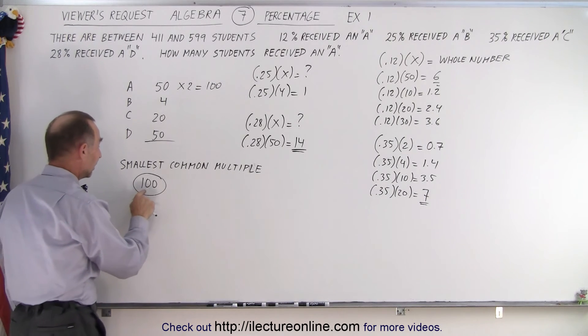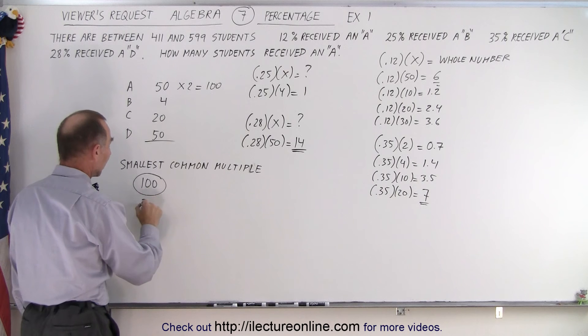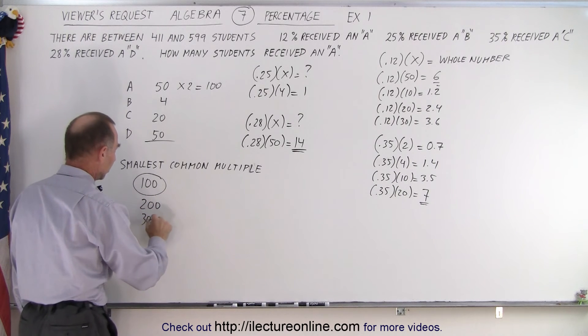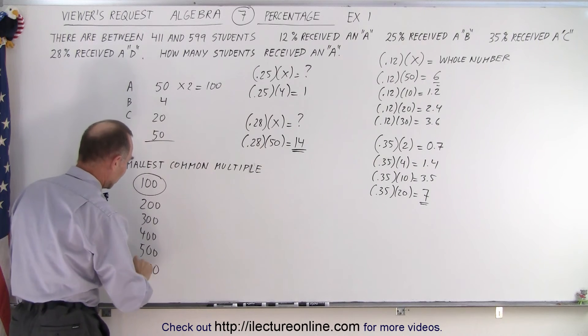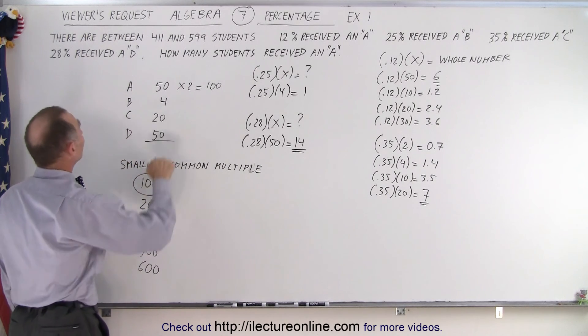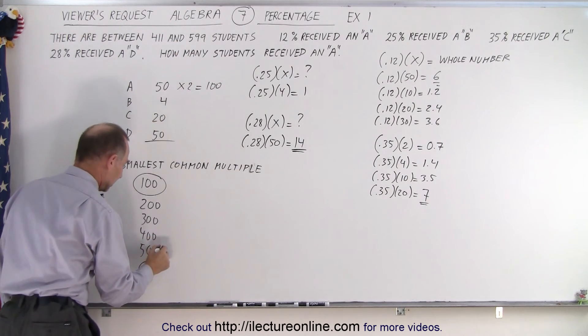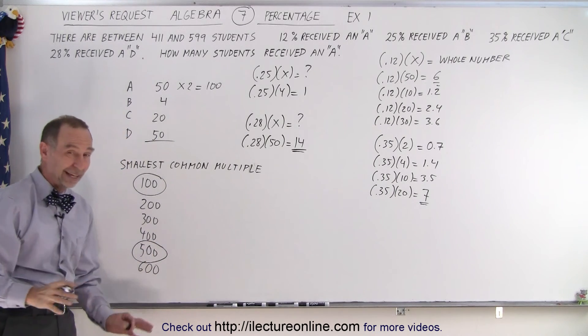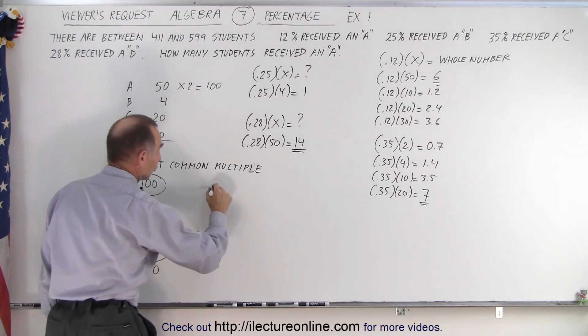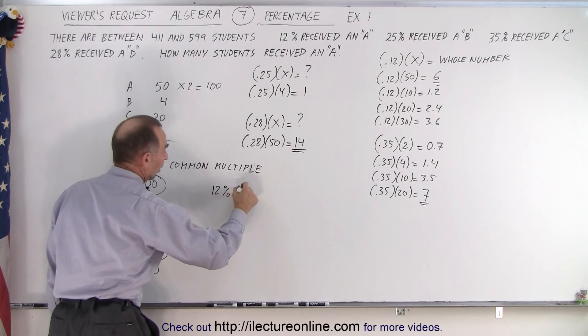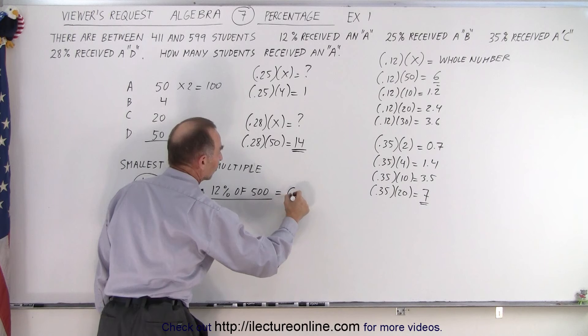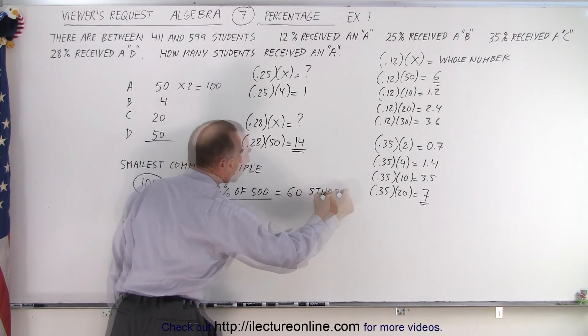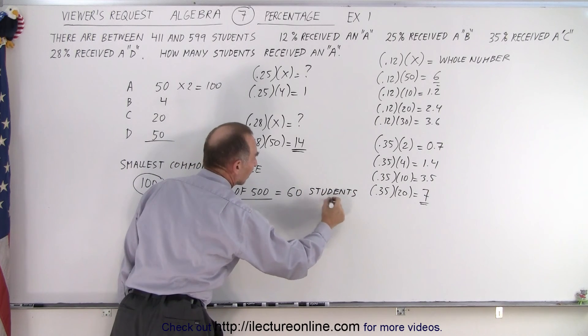So, I have 100 students, or I can have 200, or 300, or 400, or 500, or 600. And the only number that fits between 411 and 599 is 500 students. Which means I have 500 students, and if 12% of 500 students received an A, that is equal to 60 students that received an A in the class.